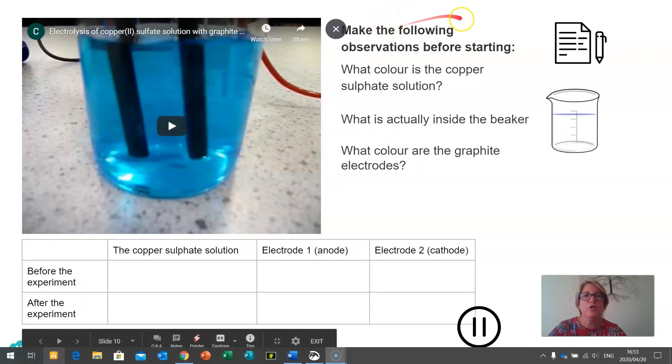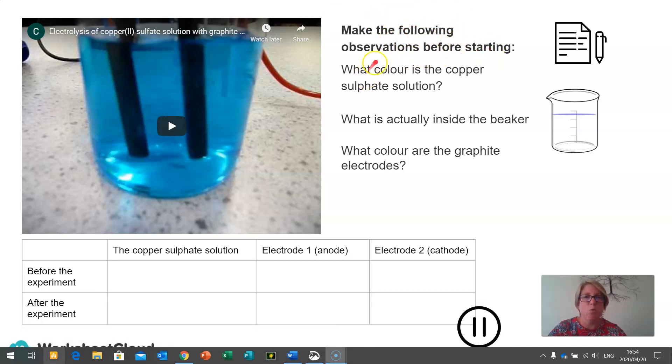I need you to make the following observations before starting. So firstly, what color is the copper sulfate solution? And then I would like you to think about what is actually inside the beaker. And what color are the graphite electrodes?